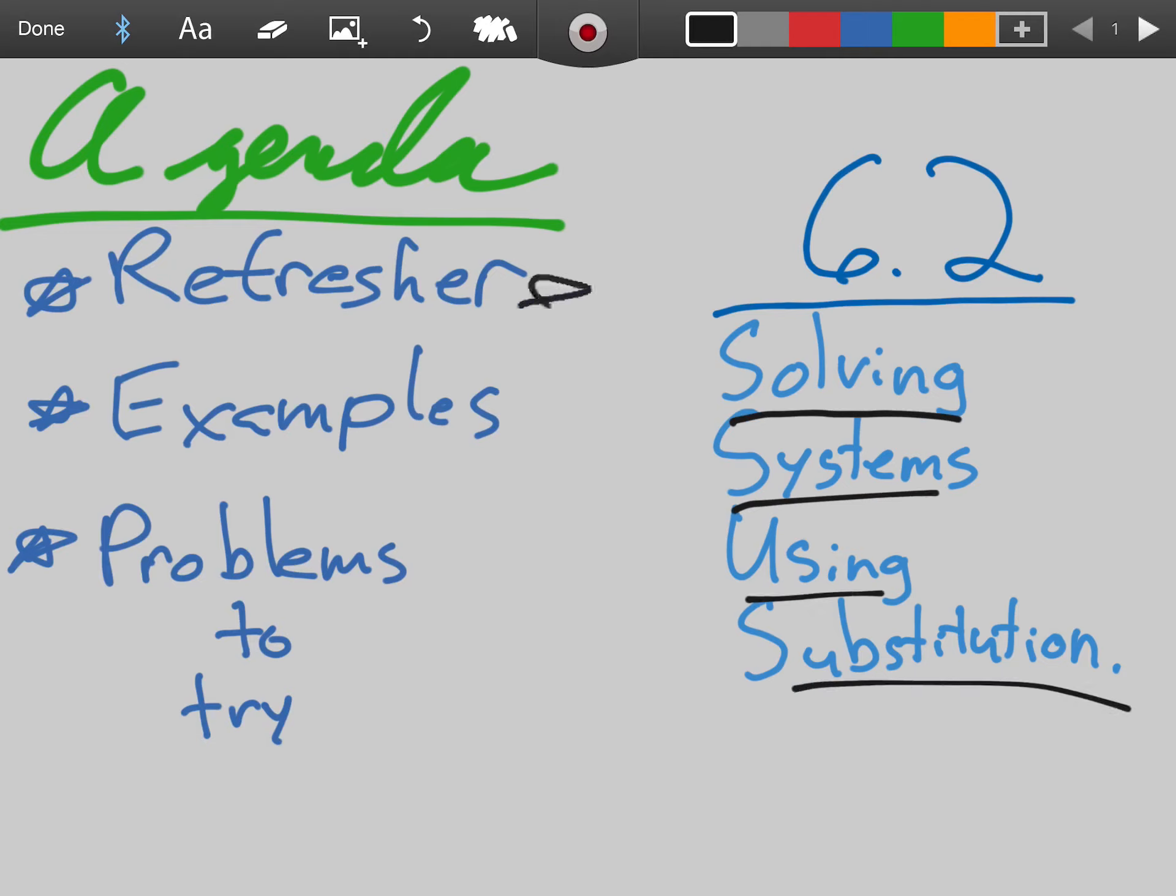For this agenda, we'll have a quick refresher on what a system is, how we've used them in the past. We'll continue to take a look at some examples, and we'll conclude with a new bit, some problems that you should be trying out to see if you understand what's going on here. And of course, if you're stuck, you can reach out with questions.